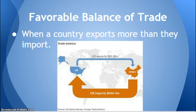When we talk about the 13 colonies, they were like the United States in that example — exporting less than they were importing from Great Britain and around the world. So Great Britain had the favorable balance of trade, not the 13 colonies.